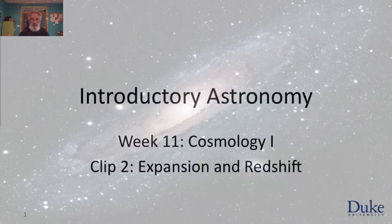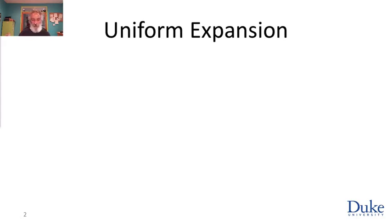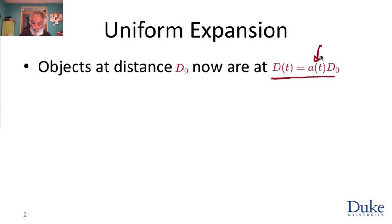To start out, let's straighten out some mathematics about the relation between the uniform expansion of the universe and the observed redshifts. We'll use this repeatedly. What I mean by uniform expansion is that all distances grow by the same factor as a function of time. We'll denote by d₀ the distance now, and call the present t=0. At time t, an object now at distance d₀ will be at distance d(t) = a(t)·d₀, where a(t) is the scale factor, common to the entire universe.